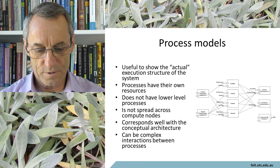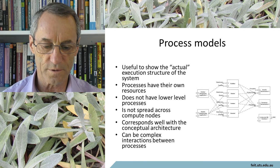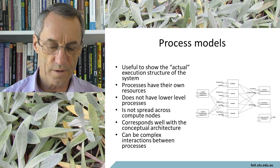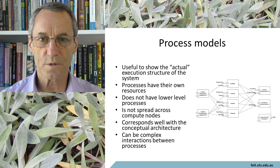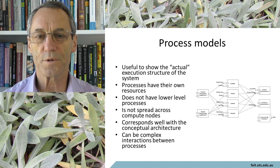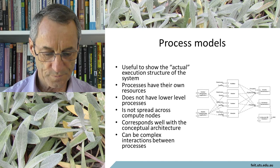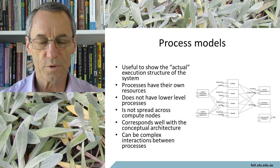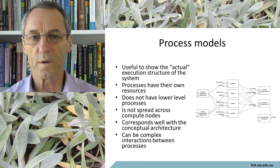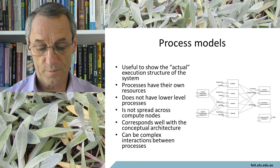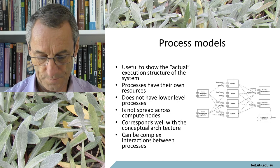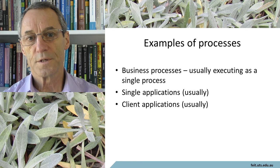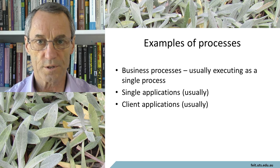Process models, by contrast — here it's useful to show the actual execution structure of the system. Processes do have their own resources. They do not have lower-level processes; a process is about as decomposed as you can go in terms of independent execution. They don't spread across nodes — a component will run on a single node. That corresponds pretty well to the conceptual architecture, but there can be complex interactions between processes. Examples of processes: business processes, usually executing as a single process; single applications, usually; and client applications, usually.